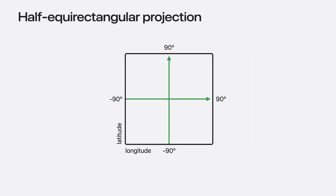The half equirectangular projection is similar, but the x-coordinate within the video frame represents the range from negative 90 to positive 90 degrees.